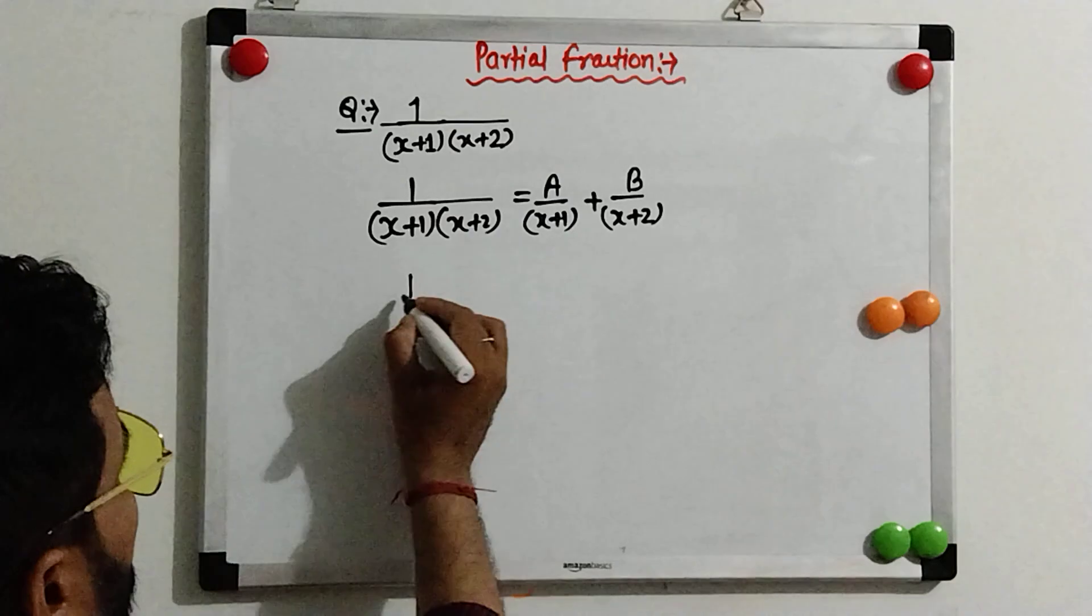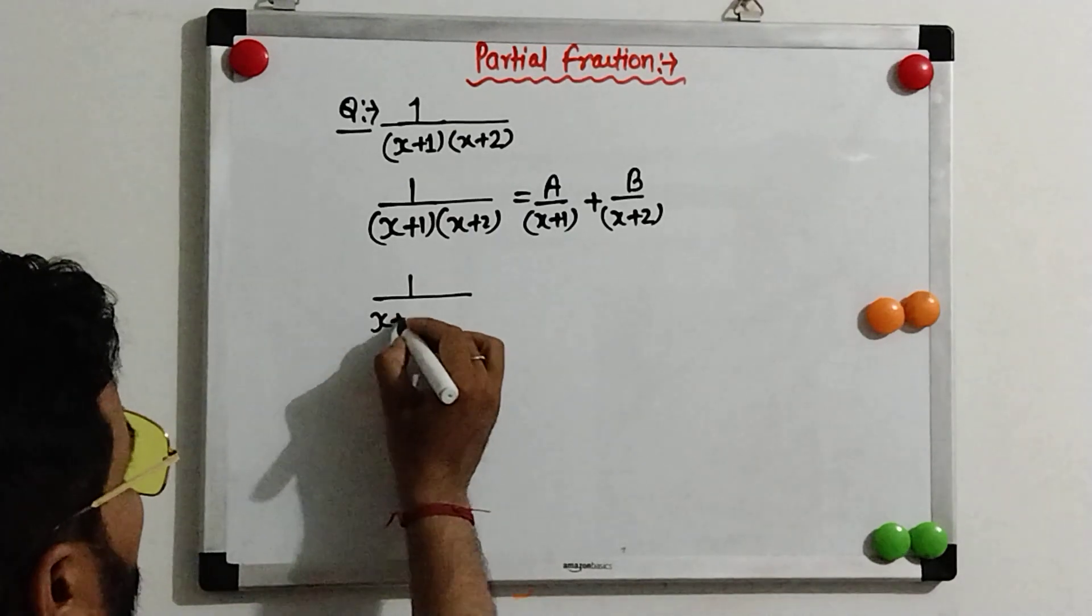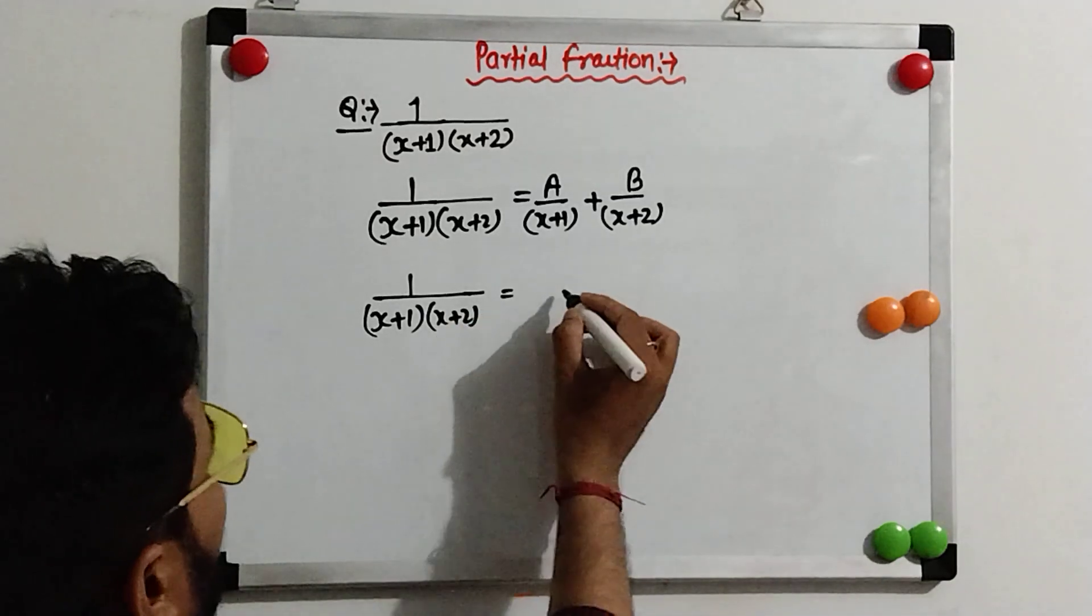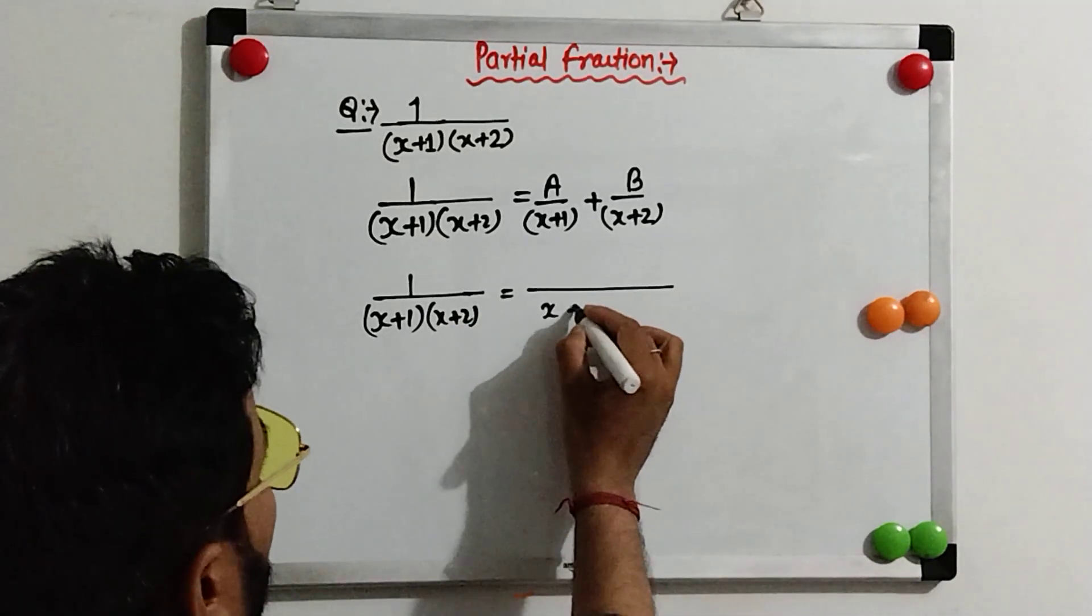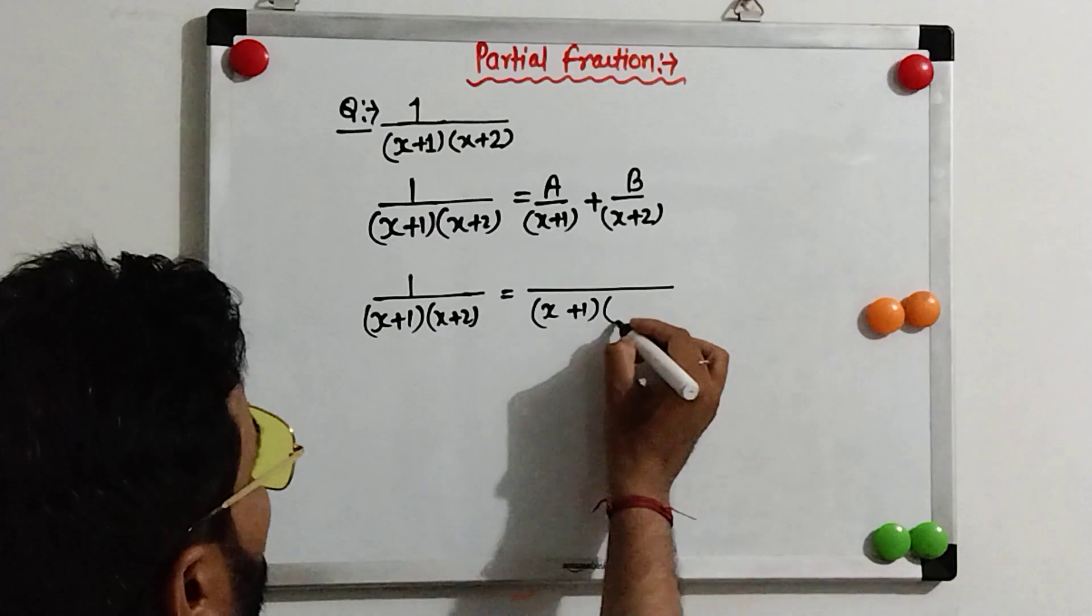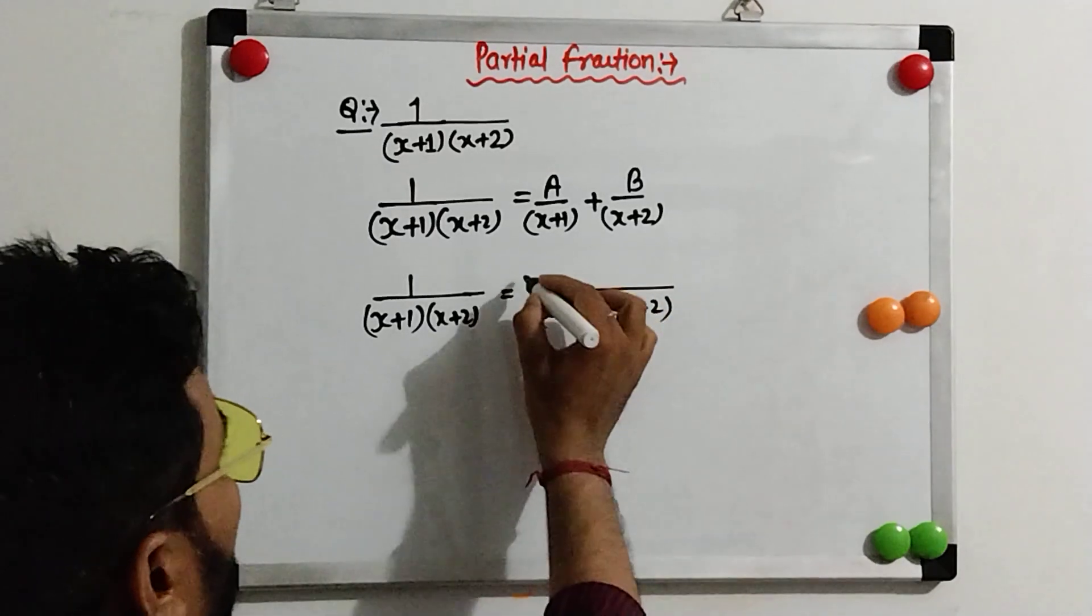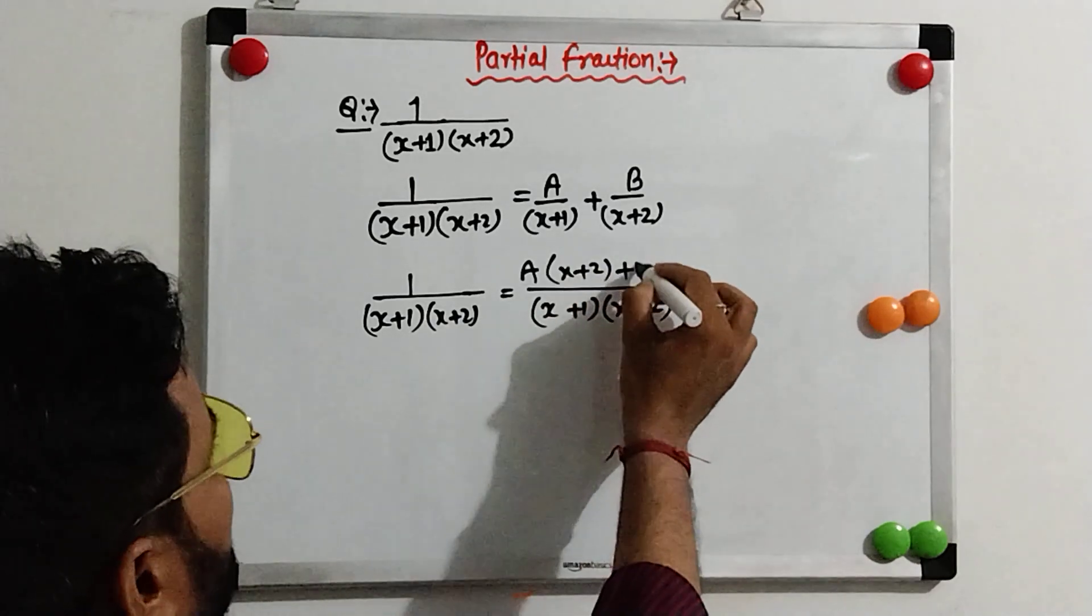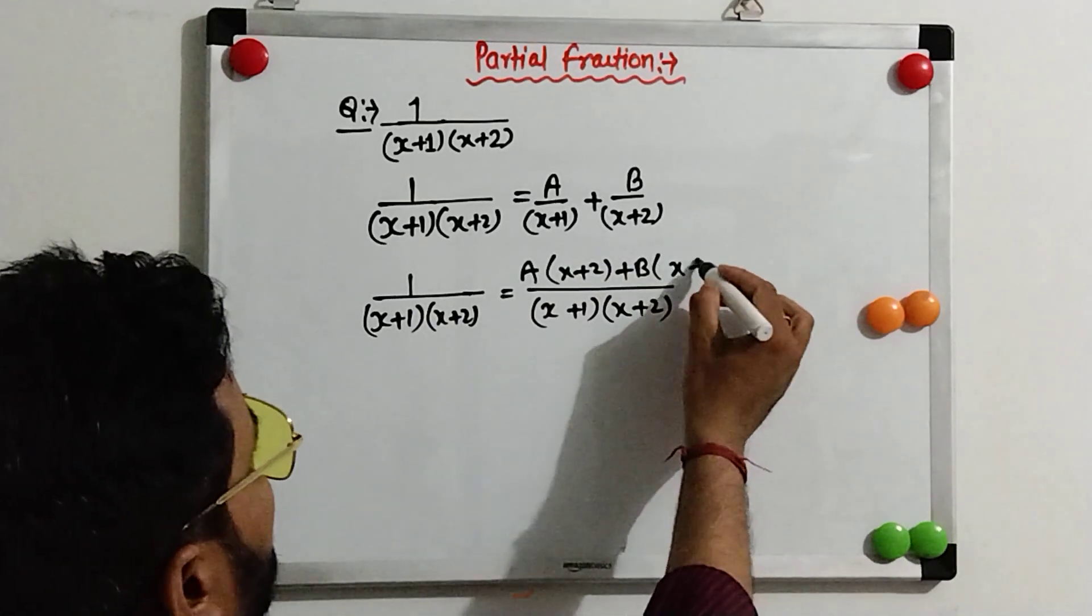Now, we can write as (x+1)(x+2). Take the LCM, (x+1) and (x+2) will be LCM. So, for A will be (x+2) and for B will be (x+1).